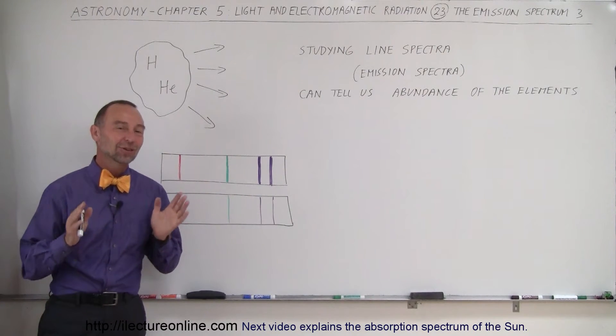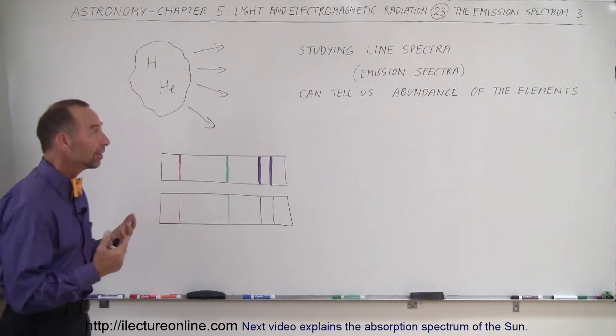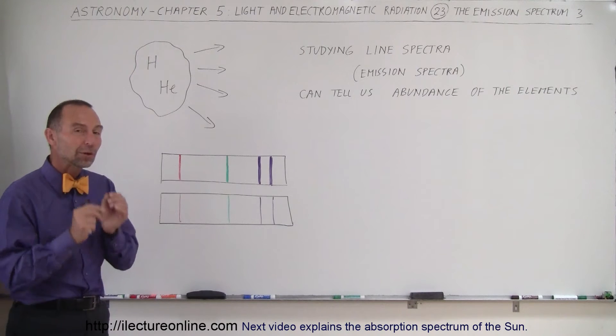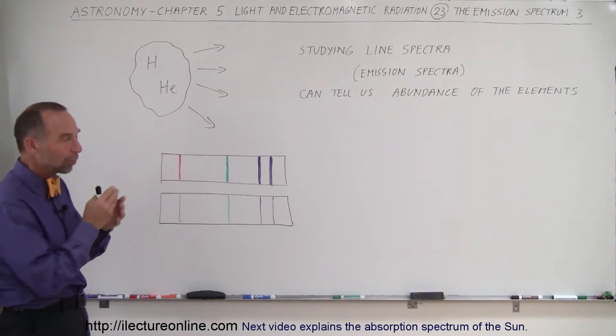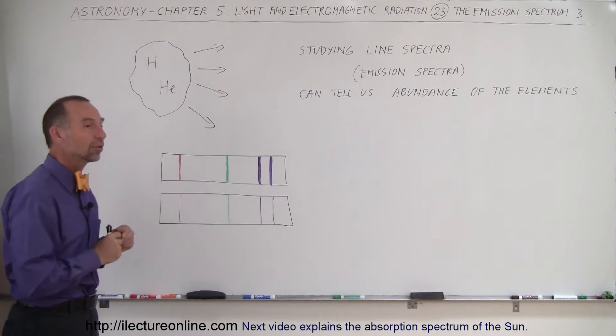Welcome to Electron Line. There's another thing we can discover by studying the spectrum of elements coming from nebulas and other objects in space. When we look at the line spectra, or emission spectra, we can actually see how much of each element is there.